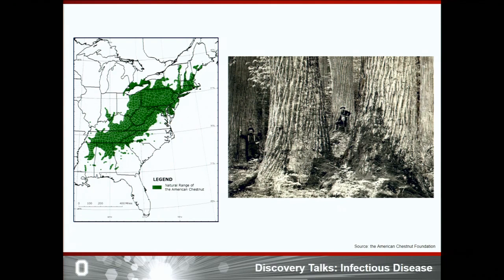But the American chestnuts, on the other hand, when they were first introduced to the fungus, they were highly susceptible, and in less than 40 years the entire forests were wiped out. So what can we do as citizens and scientists to prevent yet another disease epidemic like the chestnut blight?